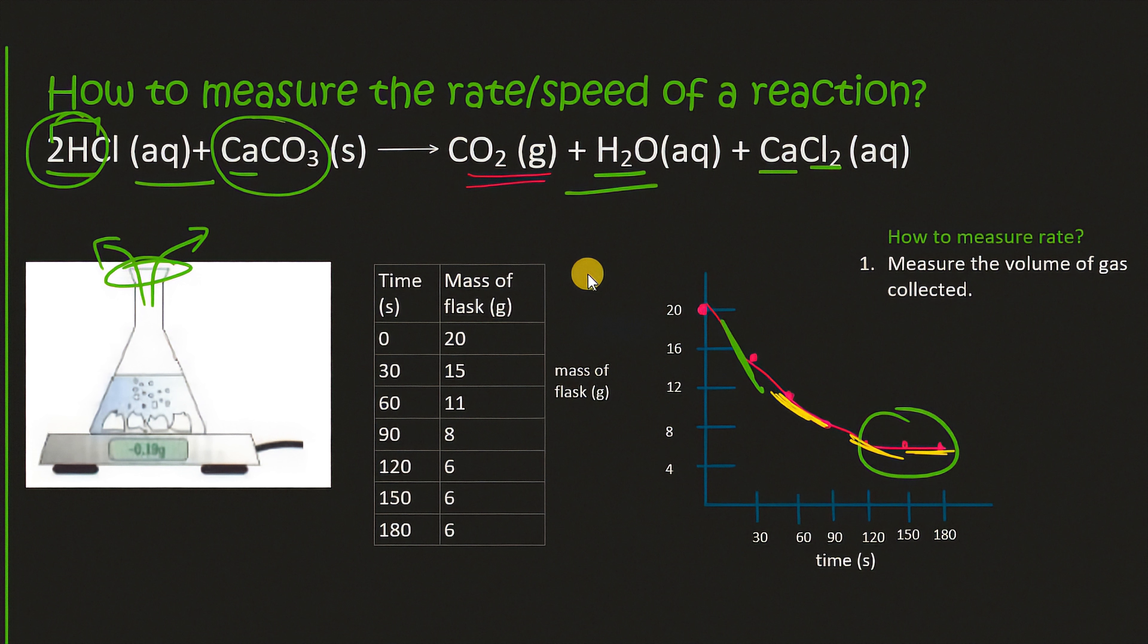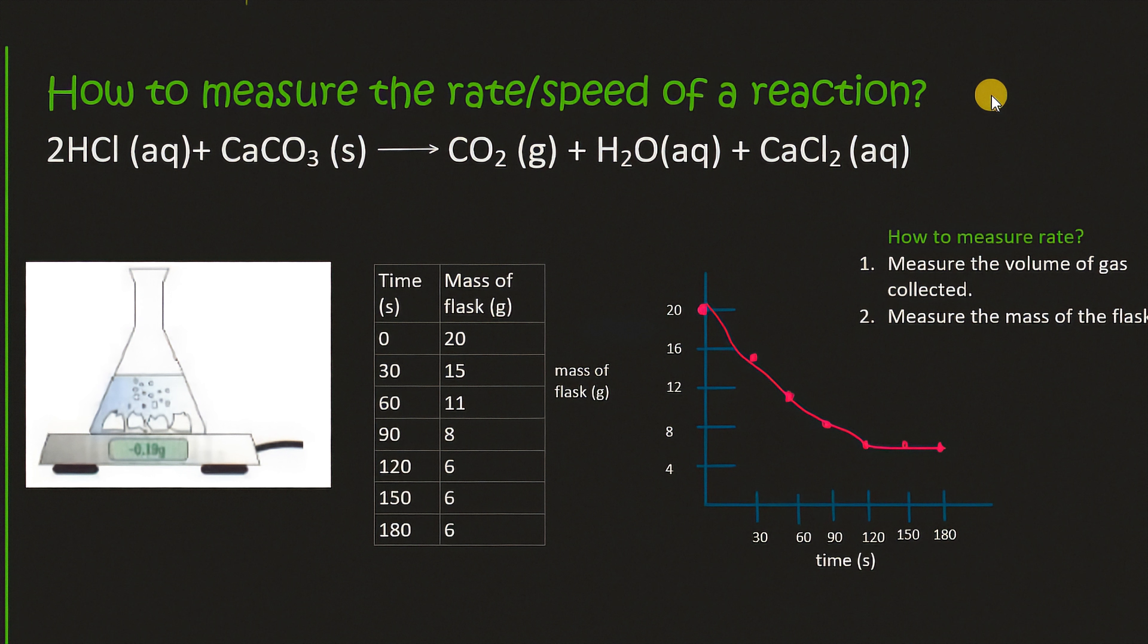And those collisions take place a lot more frequently in the beginning because we have more particles in the container. As the reaction progresses you have less particles in the container and so less frequent collisions take place and so the rate slows down. And so that's the end of this lesson.